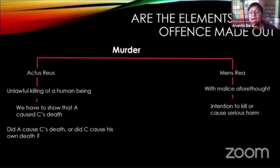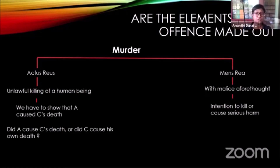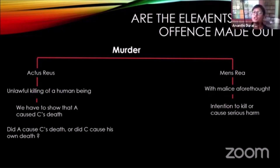Now let's look at the actus reus — and this is what in the exam we call an issue. We have to show that A caused C's death. That is the most important requirement under the actus reus, because for unlawful killing of a human being, you have to show it was A's act that was the cause of C's death. On these facts, we have a small problem: although A stabbed C, it was C who refused the medical treatment — C who refused the blood transfusion — and C died. So the question is: is A's act the cause of C's death, or is it C's own act that is the cause of C's death? This is where we look at case law.